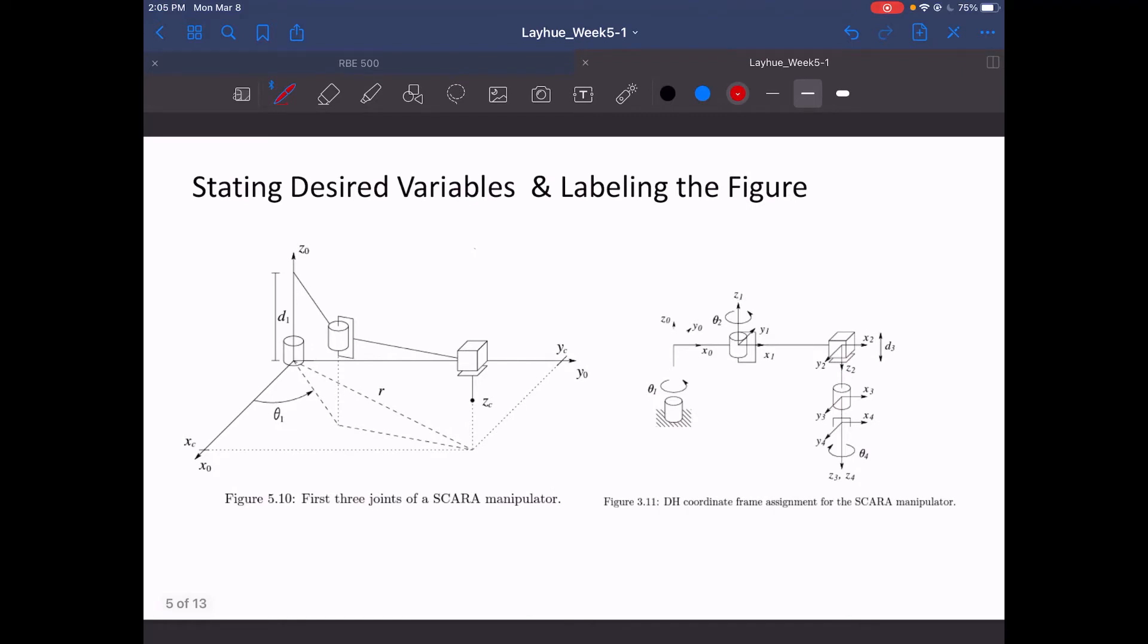So moving on, we need to understand what our desired variables are. Part of inverse kinematics is solving for those joint variables with respect to the end effector position. The figure on the right actually does have these labeled, but I will translate these over to figure 510.